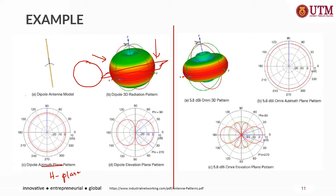When we cut it vertically in the E-plane, we may see the figure-eight shape in the E-plane or elevation or vertical plane. For this shape of radiation pattern, when we cut it horizontally, we may again see a round shape — an omnidirectional pattern.